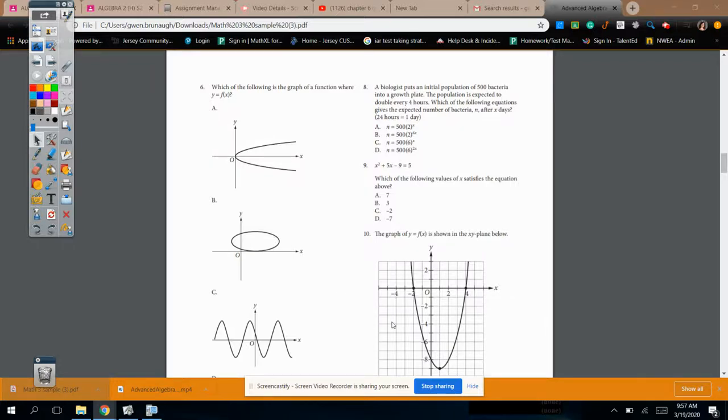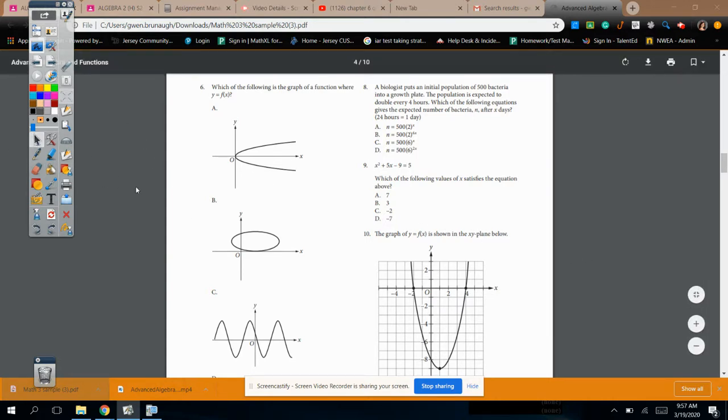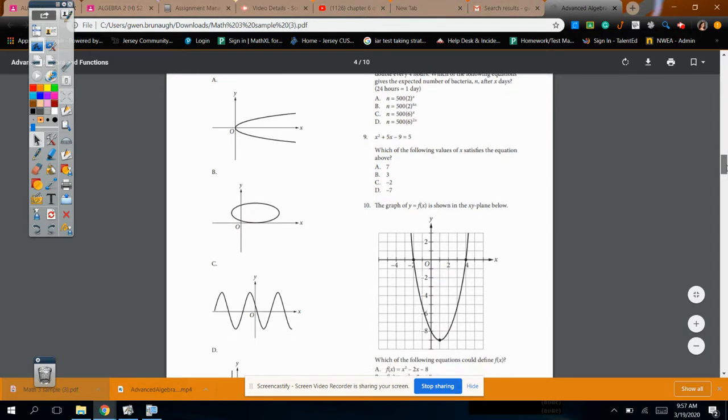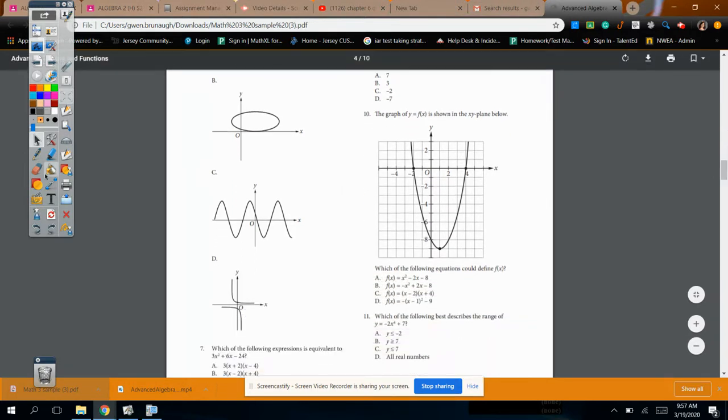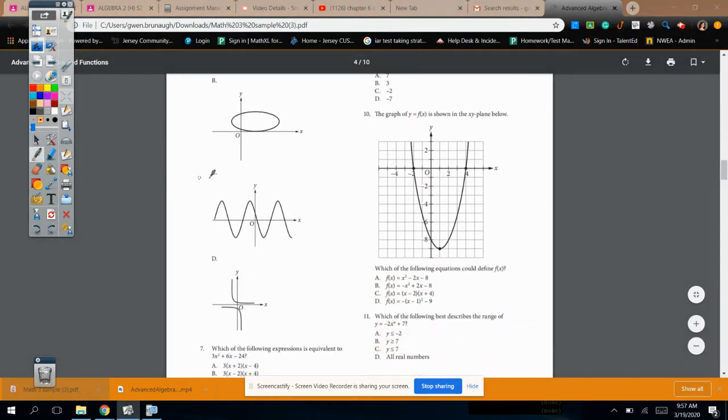This is page 2 of your placement test on advanced algebra. Which of the following in the graph is a function where y equals f of x? Remember, for functions, each y has one x, and if you would graph that, it would pass the vertical line test. So the only function that would pass the vertical line test here on number 6 is c.